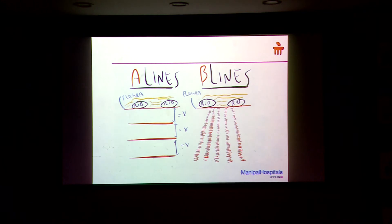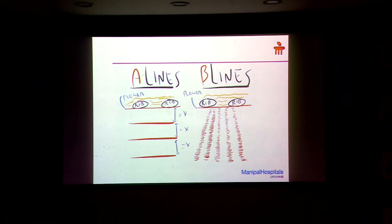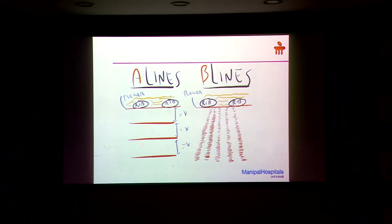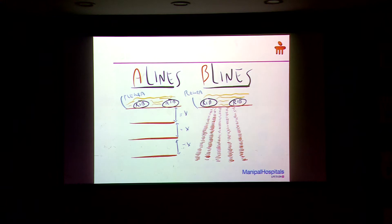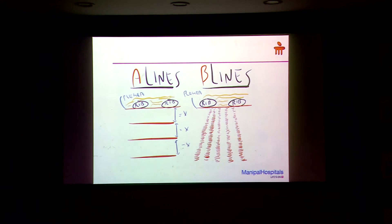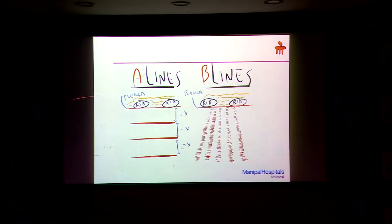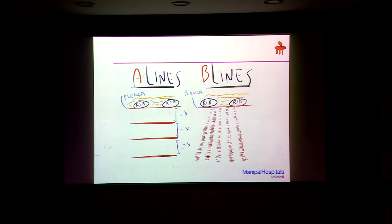There are two lines called A-line and B-line. A-lines are reflections of the pleura at equidistance, and it is a completely normal finding. If there is no lung pathology, this is what you will see — the reflection of the pleura at regular intervals until the end of the screen. It is completely normal.